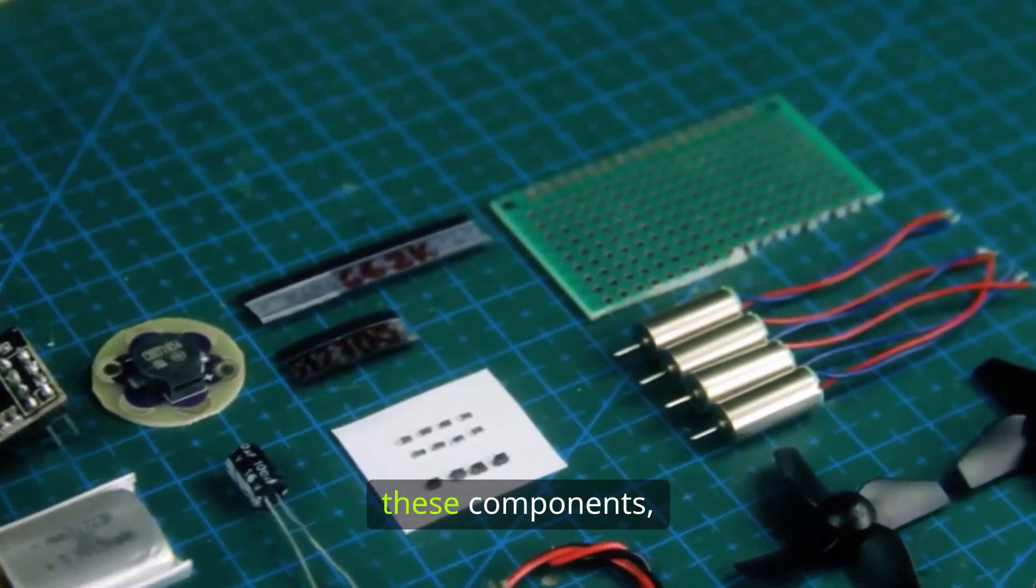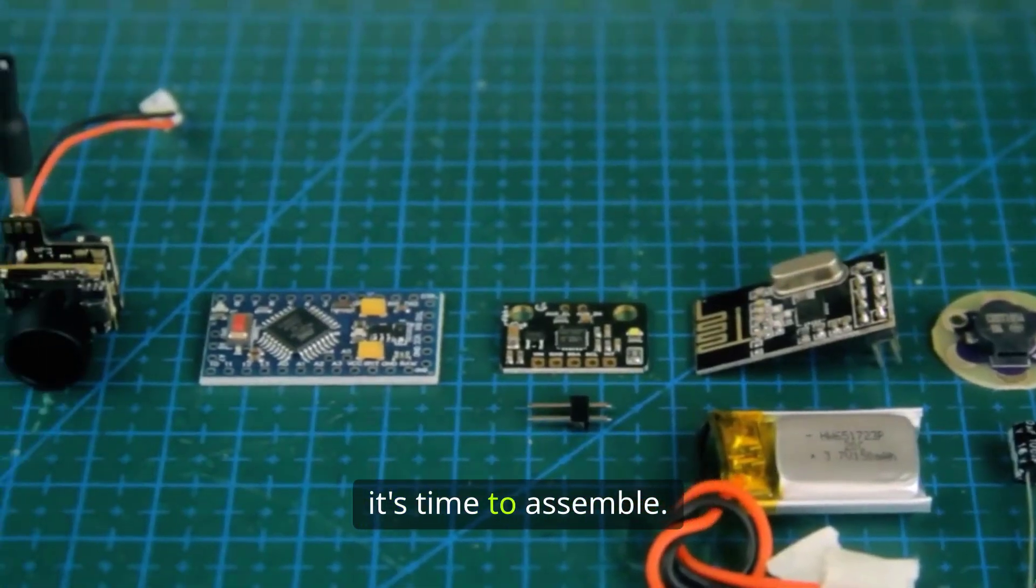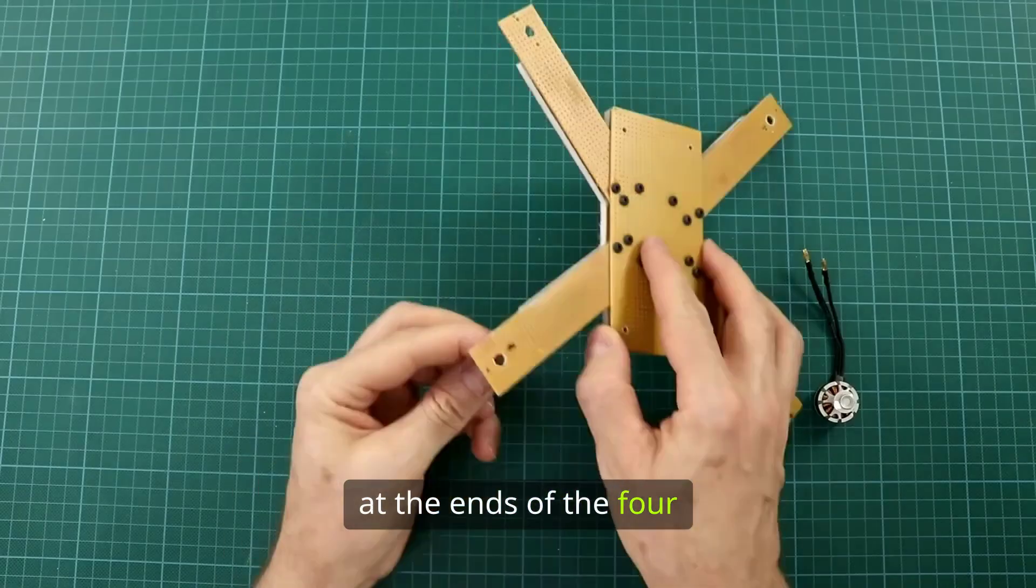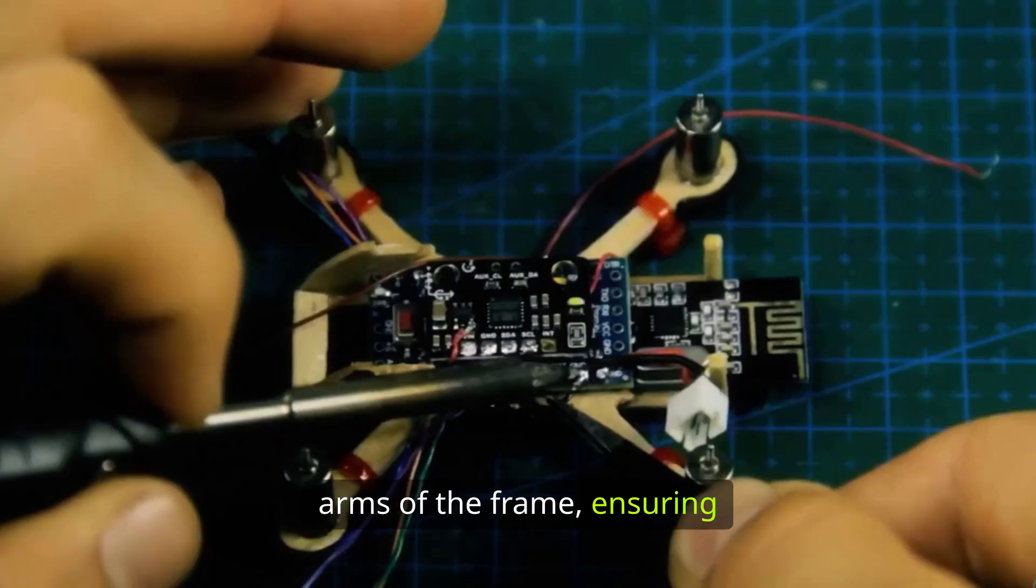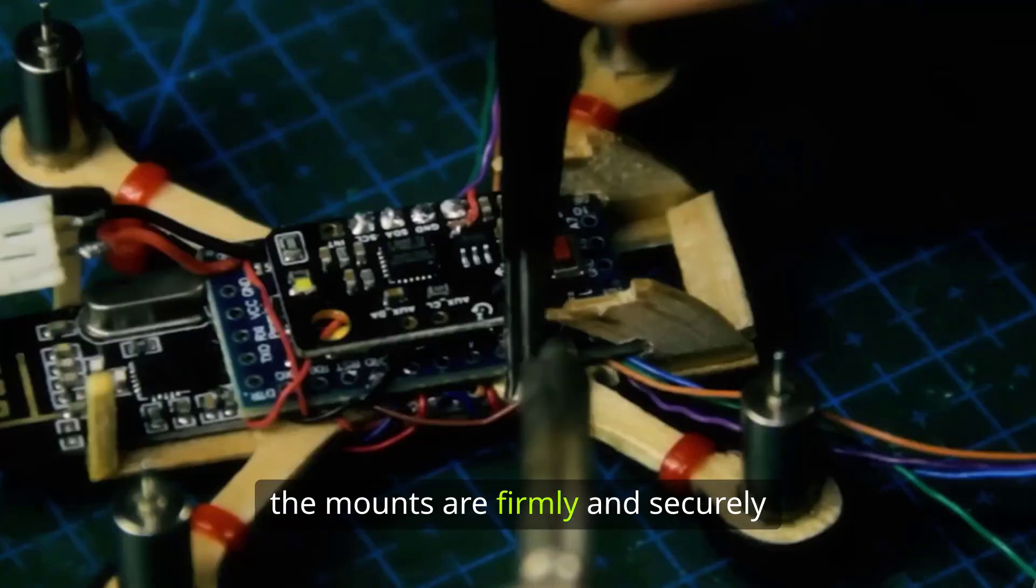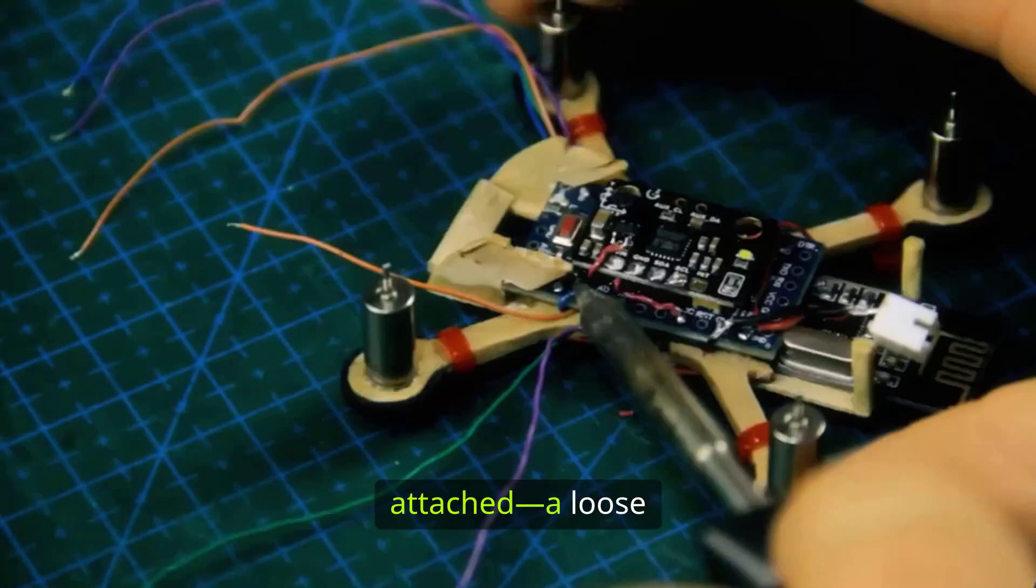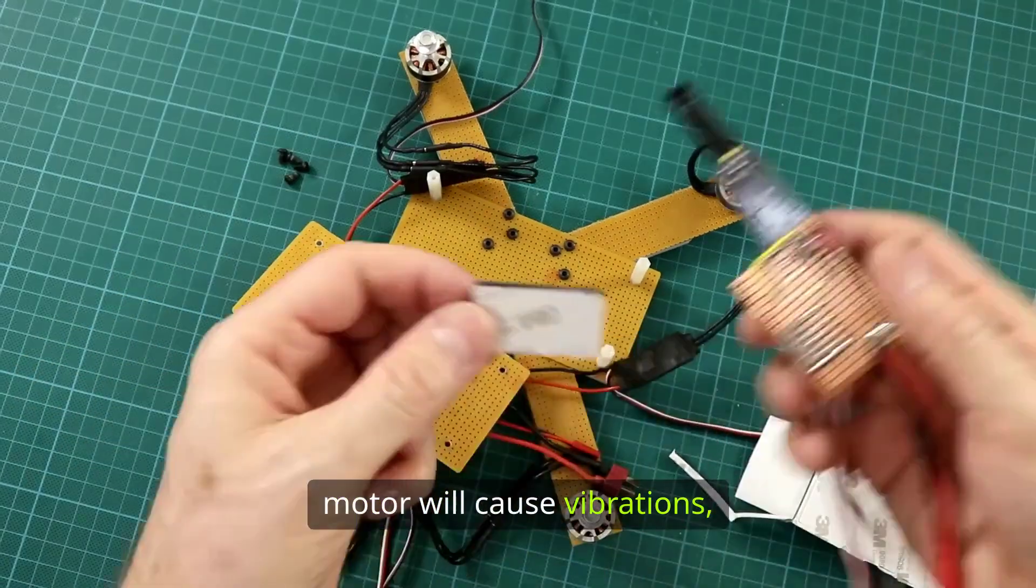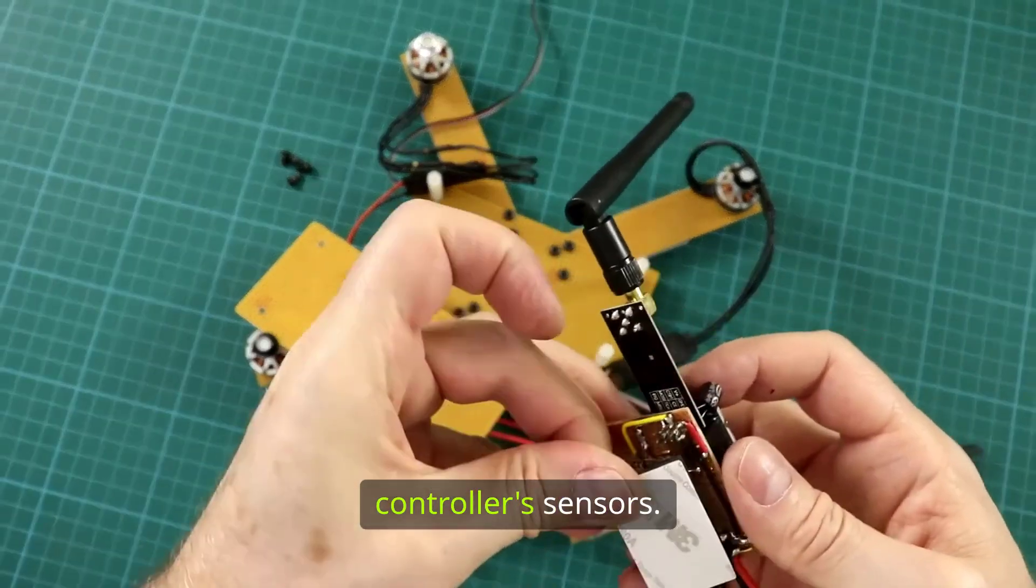After gathering all these components, it's time to assemble. Start by securing the motors at the ends of the four arms of the frame, ensuring the mounts are firmly and securely attached. A loose motor will cause vibrations which can confuse the flight controller's sensors.